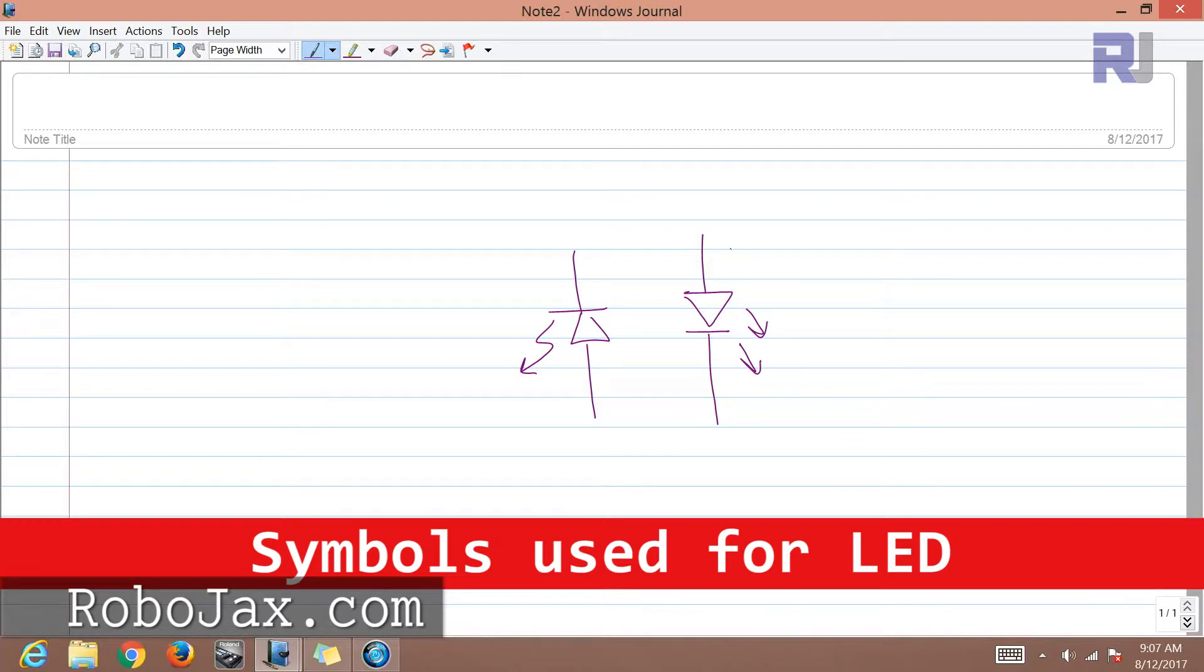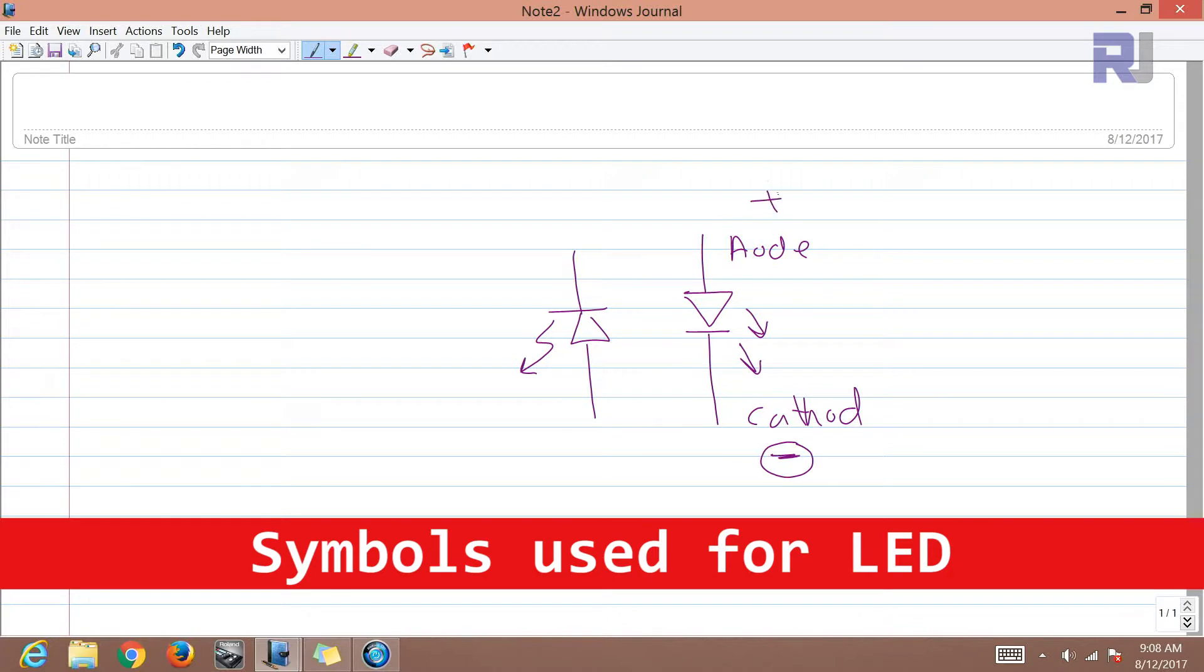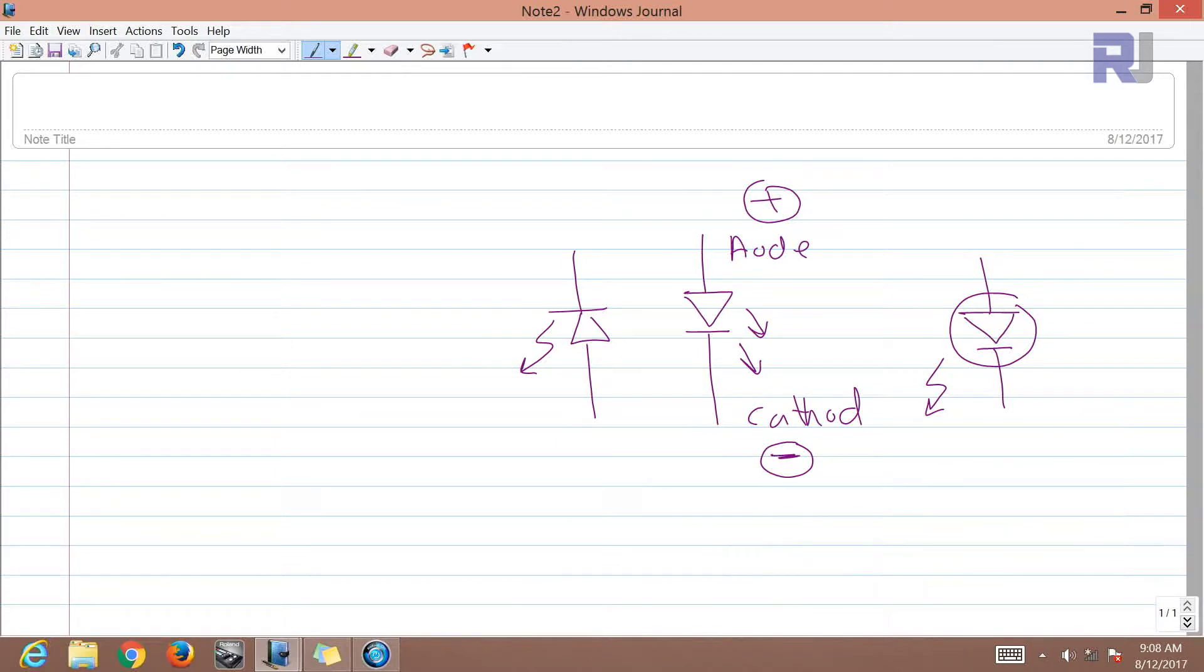This is anode and this is cathode. The cathode is connected to negative, very important. Anode is connected to positive. Sometimes you will see the shape drawn like this, so there will be a circle. Still all of these are the same.